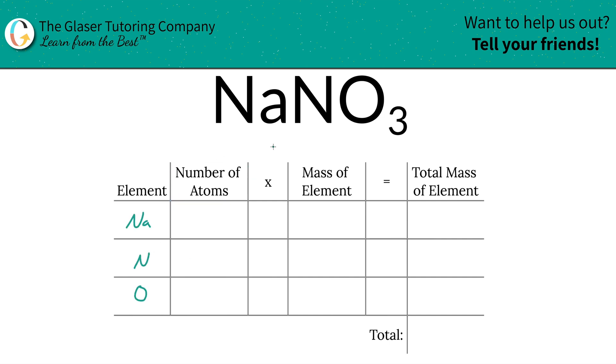Next is to identify the number of atoms of each, and that's where the subscripts help us out. So if you don't see a subscript at the bottom of the element, simply write in a 1. So sodium, we have one atom, nitrogen is 1, and oxygen is 3.